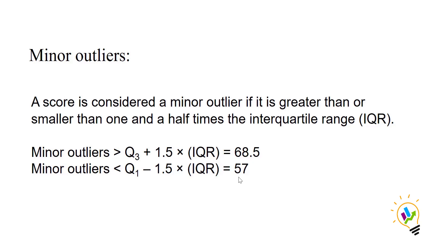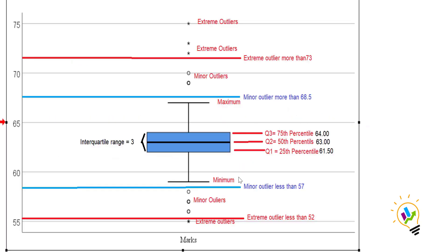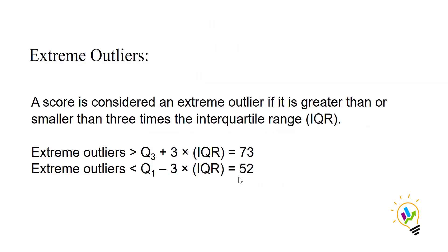A score is considered an extreme outlier if it is greater than or smaller than 3 times the interquartile range. The upper extreme outlier threshold is Q3 plus 3 times IQR, which equals 73. The lower extreme outlier threshold is Q1 minus 3 times IQR, which equals 52.